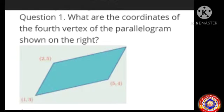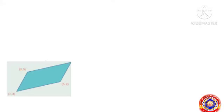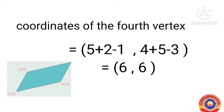Let's do one question on page number 213. What are the coordinates of the fourth vertex of the parallelogram shown on the right? The coordinates of the fourth vertex are equal to (5 + 2 − 1, 4 + 5 − 3), which equals (6, 6). So the coordinates of the fourth vertex are (6, 6).